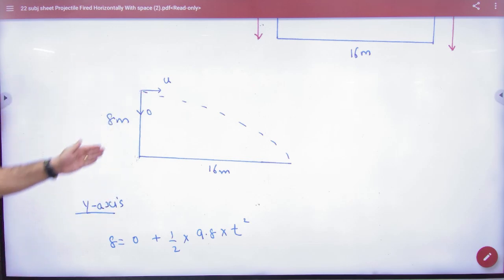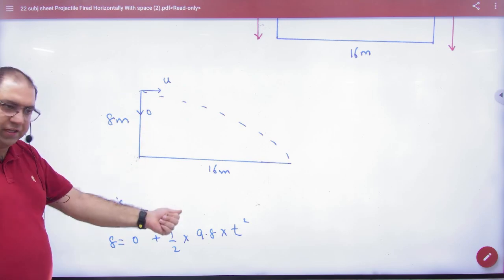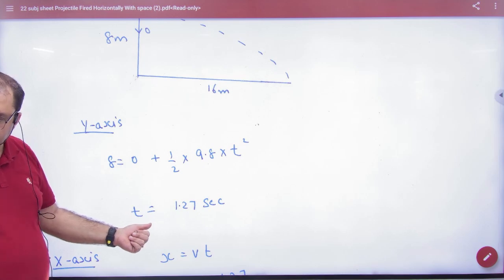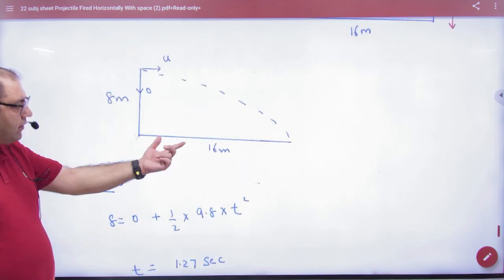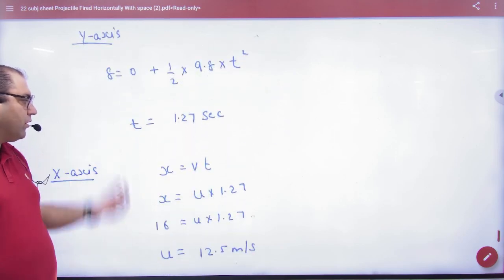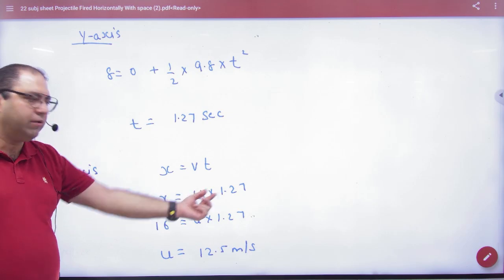So in y-axis, 8 is 0, half gt-square. Here comes time. And in that way, in x-axis, the distance is solar. U will remain the same. So x is u into time. Here comes u's value.